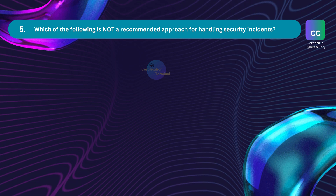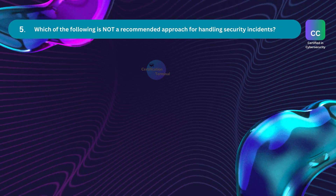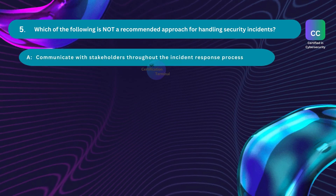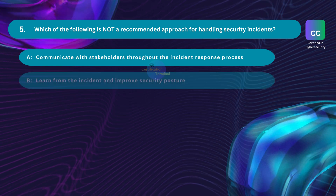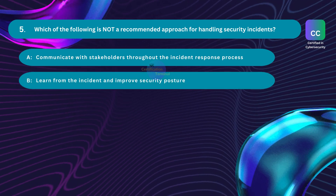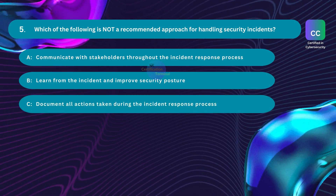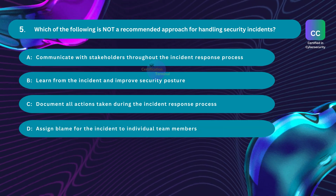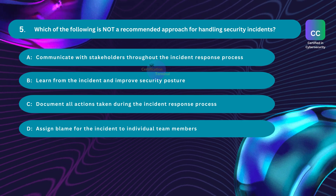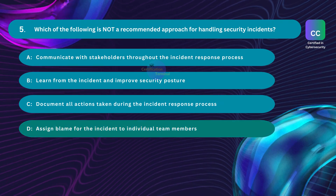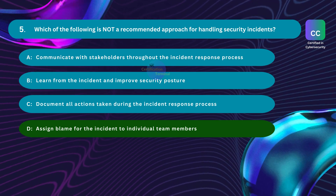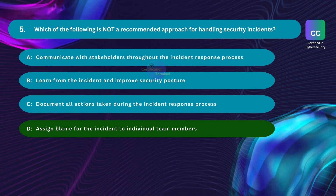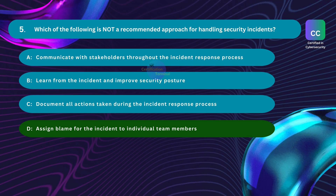Question number five: which of the following is not a recommended approach for handling security incidents? Option A: communicate with stakeholders throughout the incident response process. Option B: learn from the incident and improve security posture. Option C: document all actions taken during the incident response process. Option D: assign blame for the incident to individual team members. The correct answer is option D: assign blame for the incident to individual team members, as blame assignment has detrimental effects on incident response effectiveness and organizational culture.